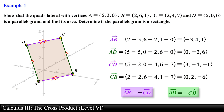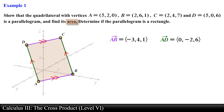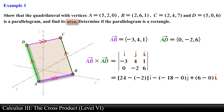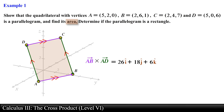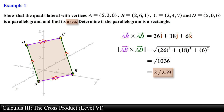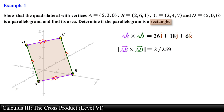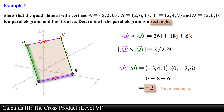Now that we have shown the vertices form a parallelogram, we find the area by computing the magnitude of the cross product between two adjacent vectors. We find the cross product between vector ab and vector ad by setting up the determinant and finding the minors, obtaining specific components. Finding the magnitude of this vector gives the area of the parallelogram. To check if it is a rectangle, we compute the dot product between the same vectors — if zero, the vectors are orthogonal and the shape is a rectangle. The dot product equals negative two, which is not zero, so this parallelogram is not a rectangle.